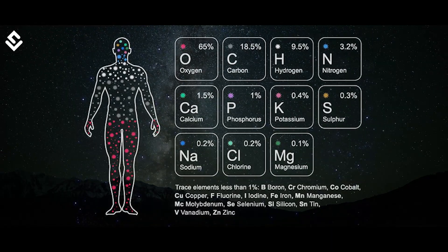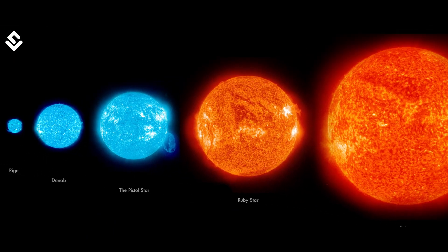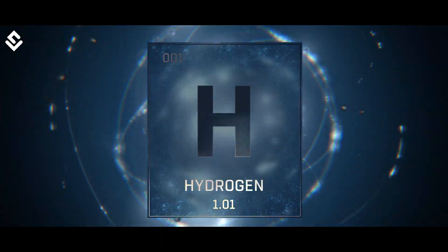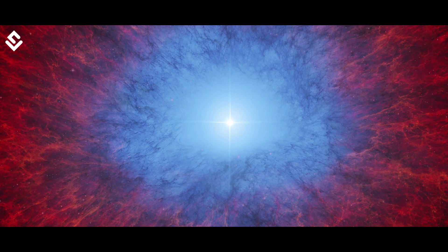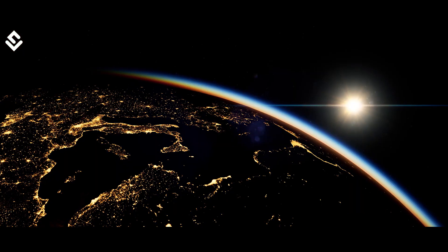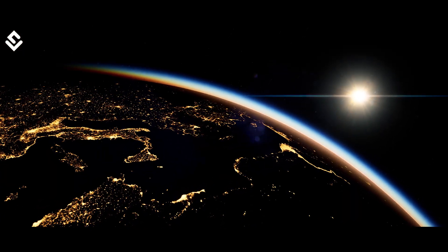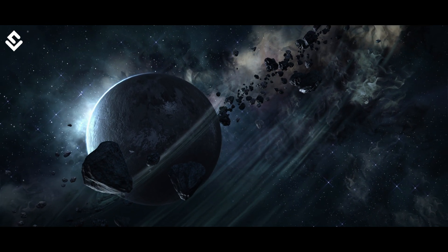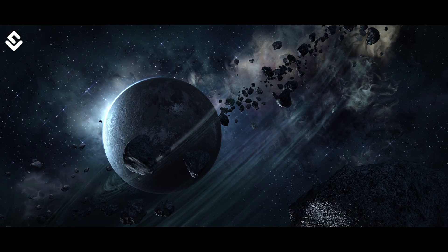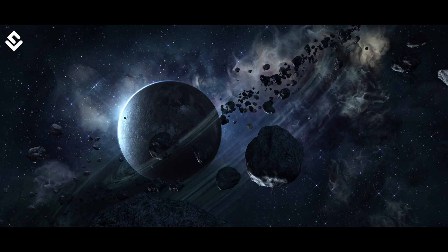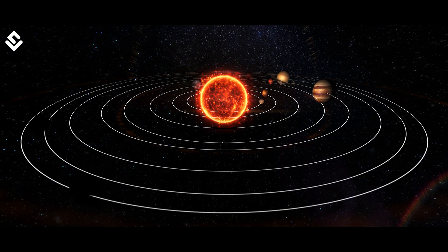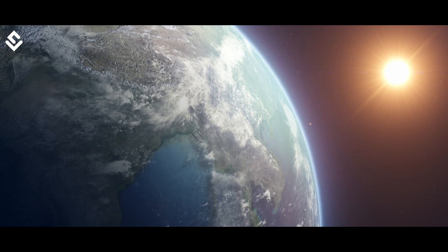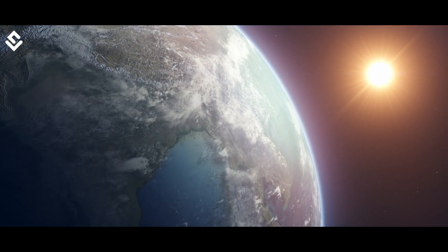Thus the twinkling stars are the reason we exist — we are stardust. But our Sun is not that big a star to produce all these elements. The best it can do is to fuse all its hydrogen atoms and spend its retirement as a white dwarf. So where do all these elements inside Earth, Venus, and Mars come from? Our Sun is not a first-generation star, but second or maybe third.